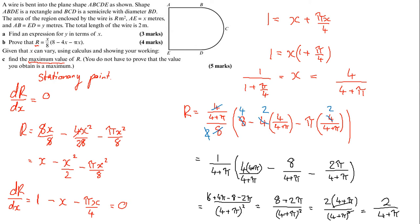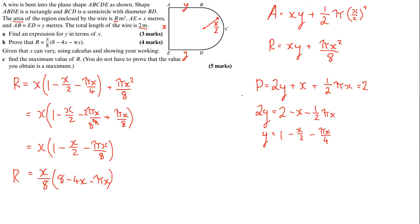And that is the full solution for this 12-mark answer. To recap the big steps: you're given area and wire length in the question, so those are your two formulas — area and perimeter. Express them as equations. Then rearrange the perimeter equation to get y as the subject and substitute into the area formula. Differentiate, set equal to zero, find x, then substitute back to find the maximum R. I hope this is helpful — I'll be recording another one soon.